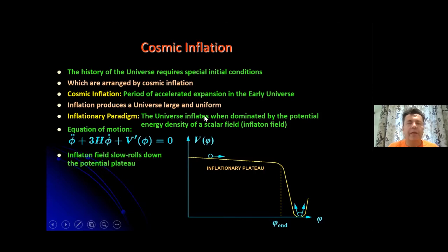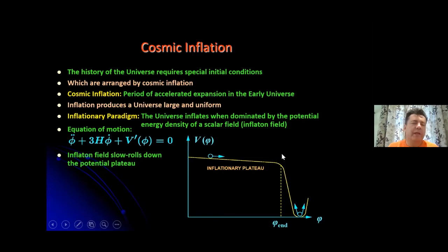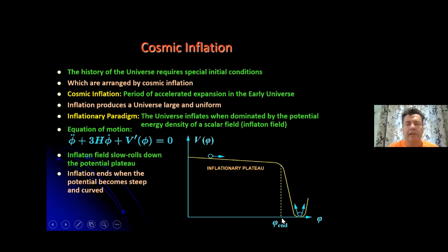The inflationary paradigm says that we need potential energy domination. This means that the inflaton field must slow-roll down some sort of potential plateau — there should be a flat region in the potential. At some point, inflation needs to end when the potential becomes steep and curved. There is a critical value beyond which the energy density of the inflaton is no longer potential-energy dominated, and the inflaton begins to oscillate around its vacuum expectation value (VEV).